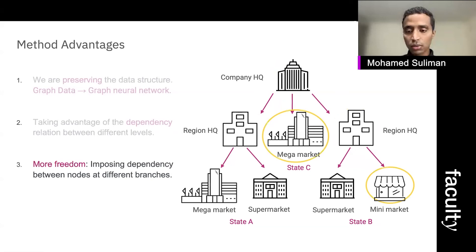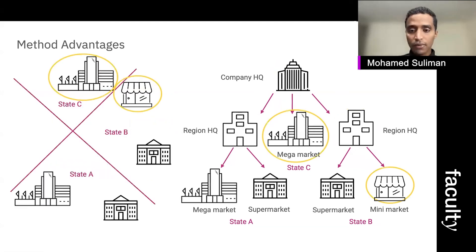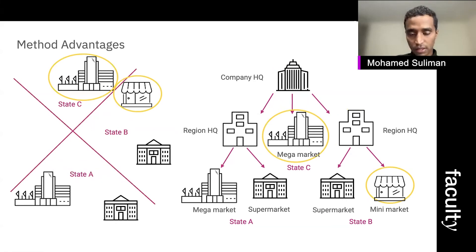This is not an artificial scenario — it might be very realistic. It might be the case that the mega supermarket at state C is geographically closer to the mini supermarket at state B.